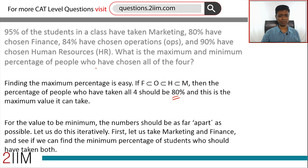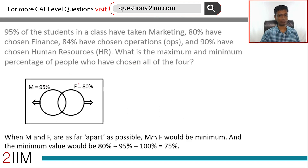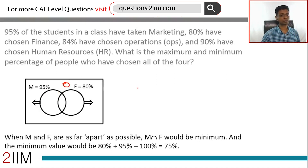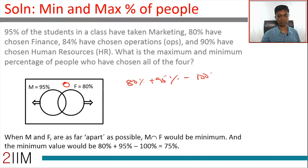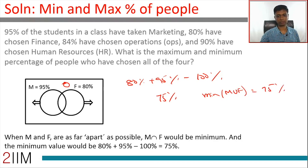Let's think about only marketing and finance first — 95% and 80%. To find the minimum overlap, we stretch the sets out as much as possible so that M ∪ F = 100%. Then the minimum intersection is 80% + 95% − 100% = 75%. So the minimum of M ∩ F is 75%.